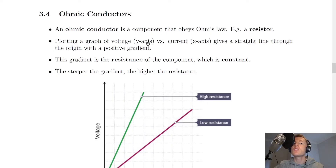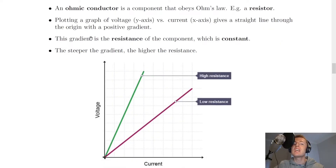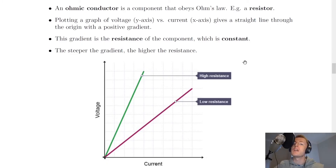Plotting a graph of voltage on the y-axis versus current on the x-axis gives a straight line through the origin with a positive gradient. So any ohmic conductor will show this straight line relationship through the origin. This gradient is the resistance of the component, which is constant.